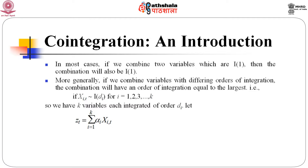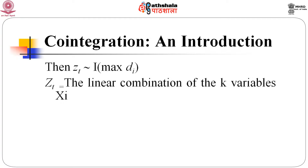After defining the concept of integrated series, let us have an idea of co-integration. In most cases, if we combine two variables which are I(1), then the combination will also be I(1). More generally, if we combine variables with different orders of integration, the combination will have an order of integration equal to the largest. That is, if x_{it} follows I(d_i), for i running from 1 to k, we can have k variables each integrated of order d_i, and take the weighted average of those integrated series. Then z_t will be integrated of order maximum d_i, and z_t is a linear combination of the k variables x_i.